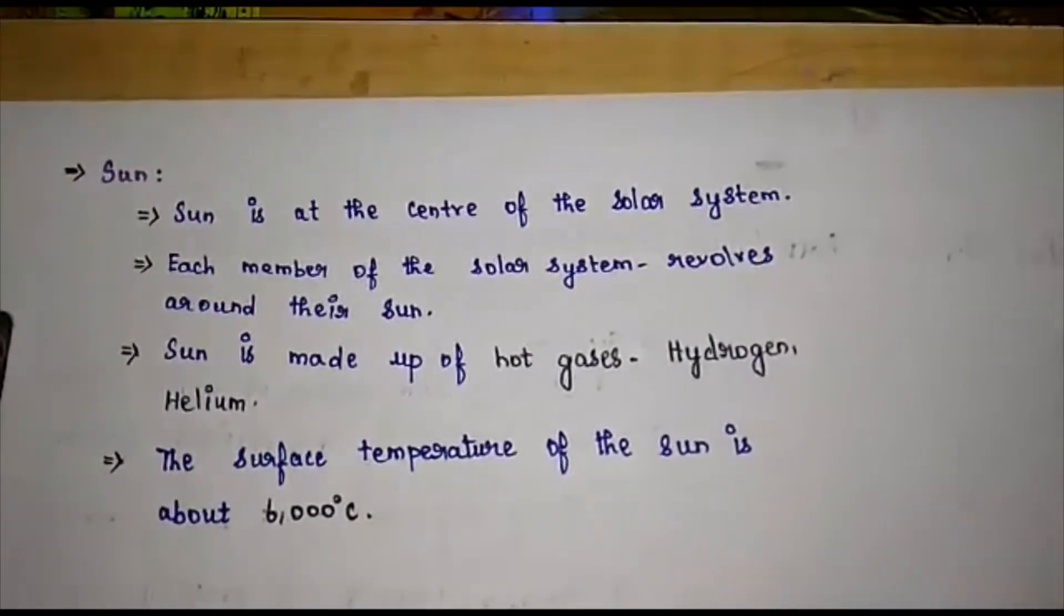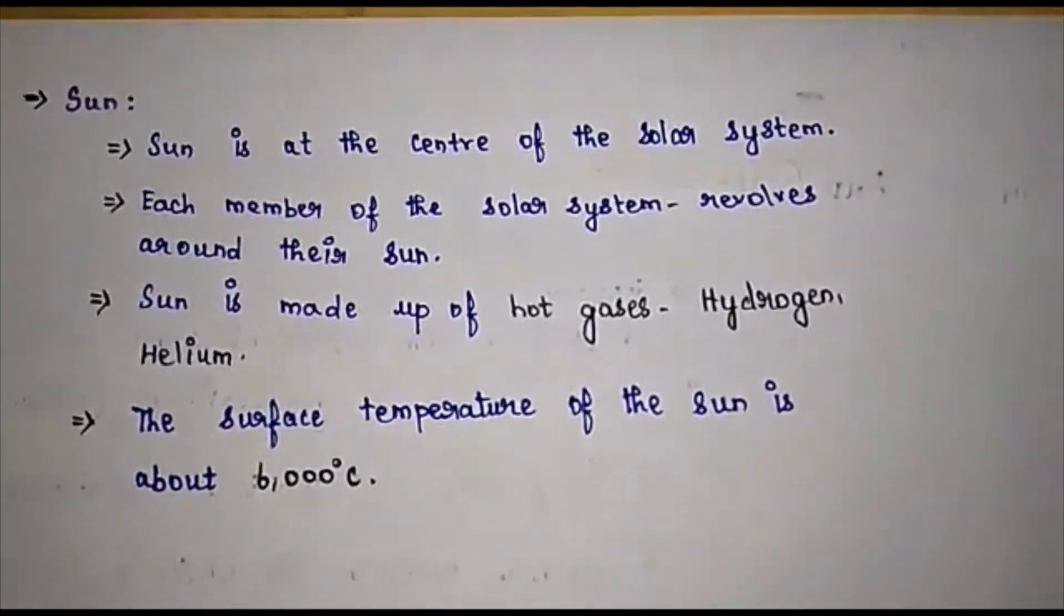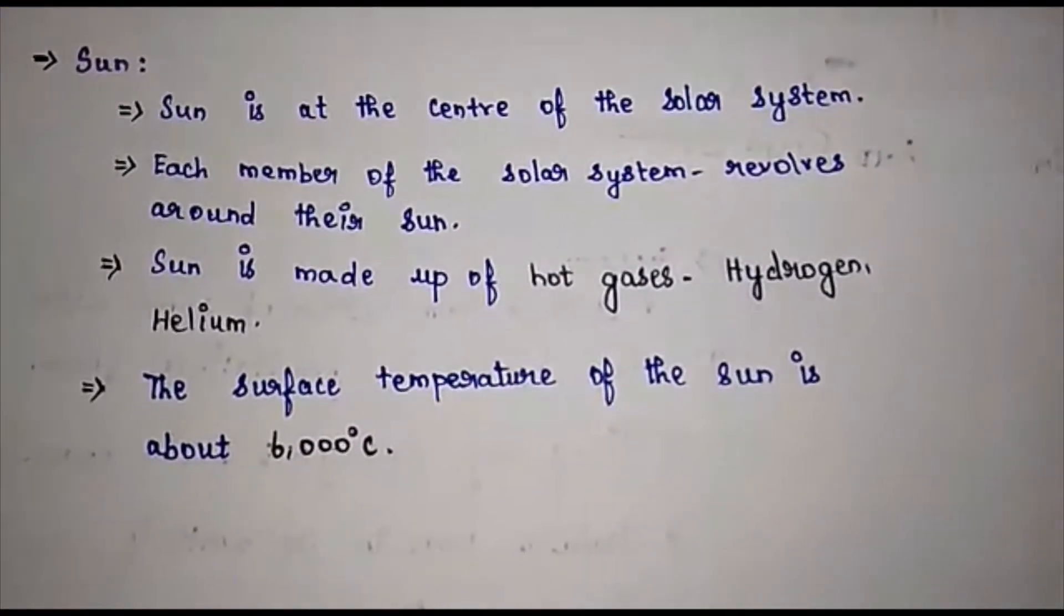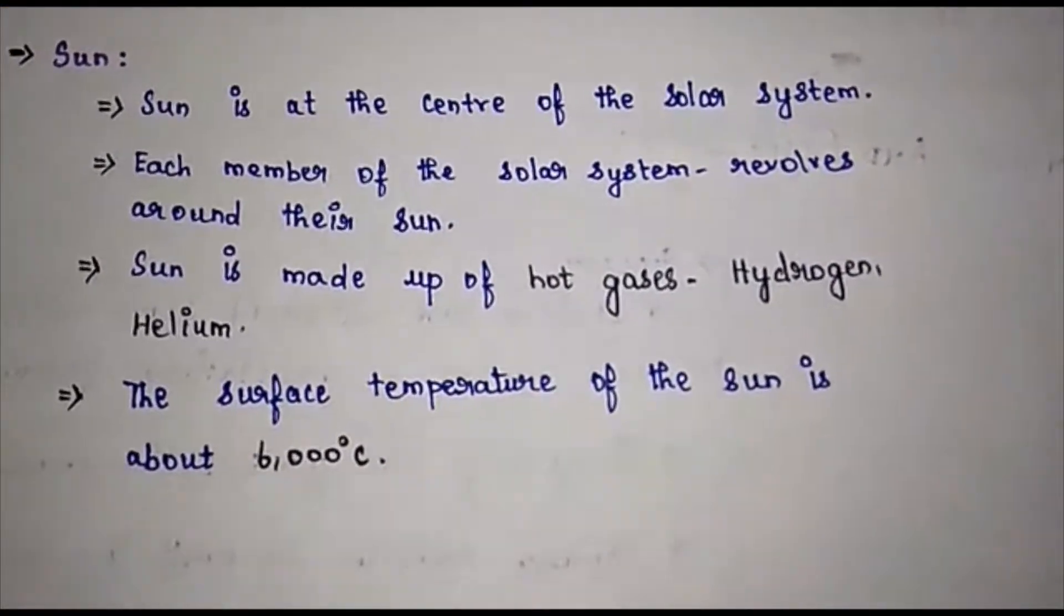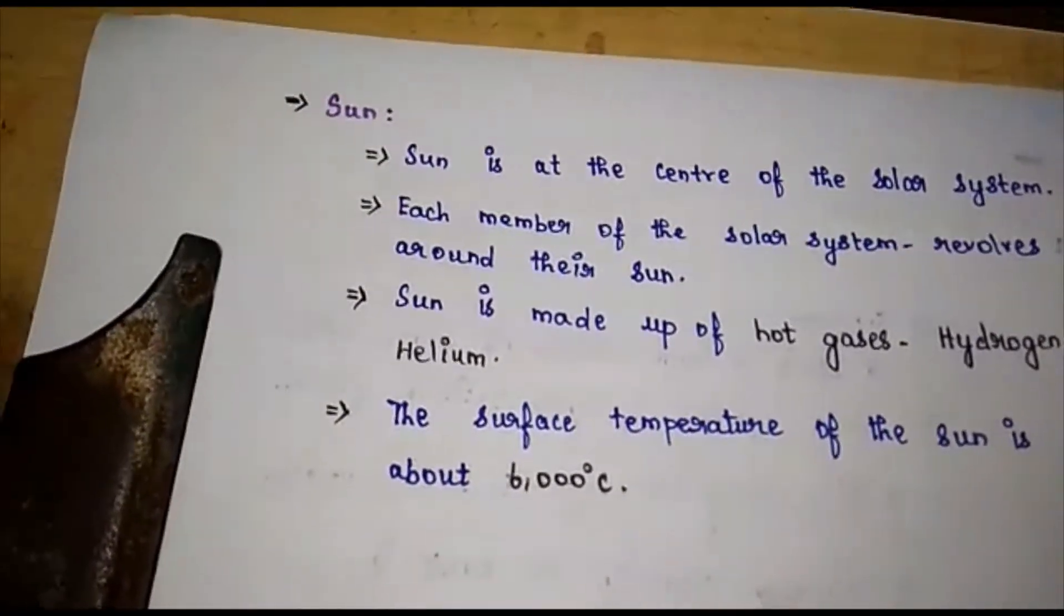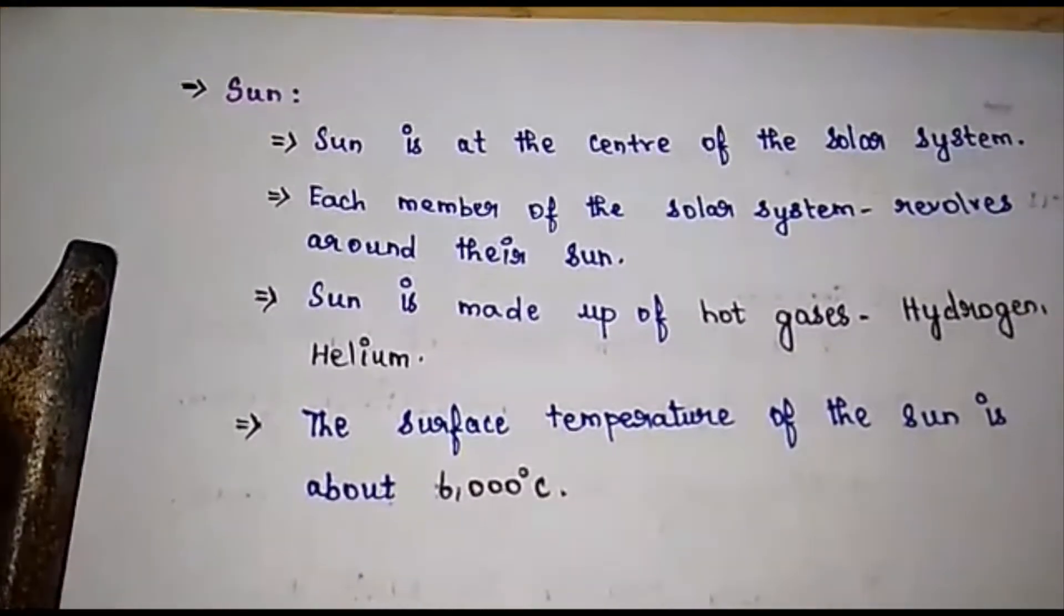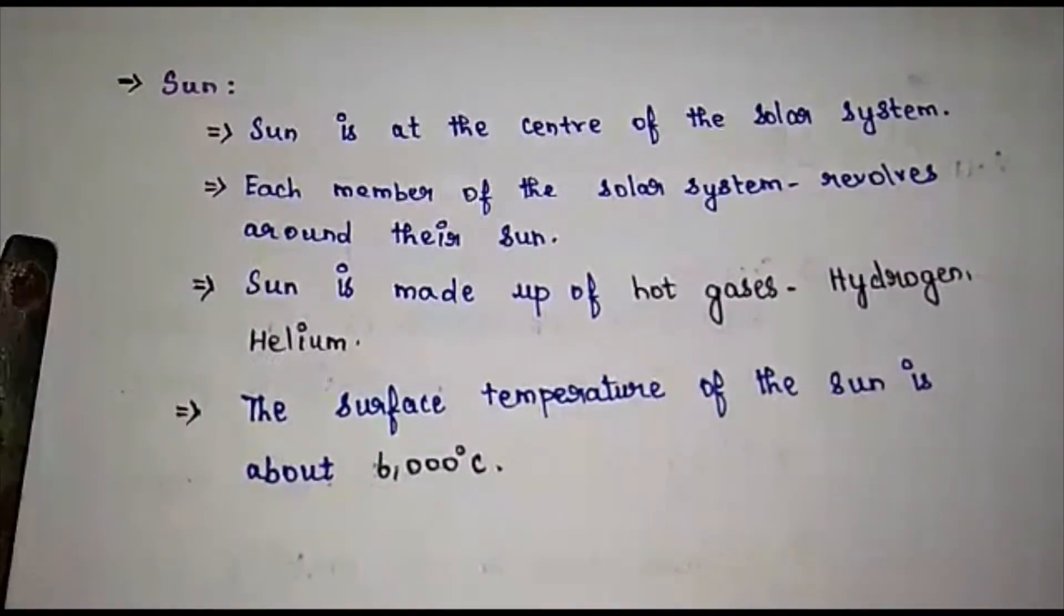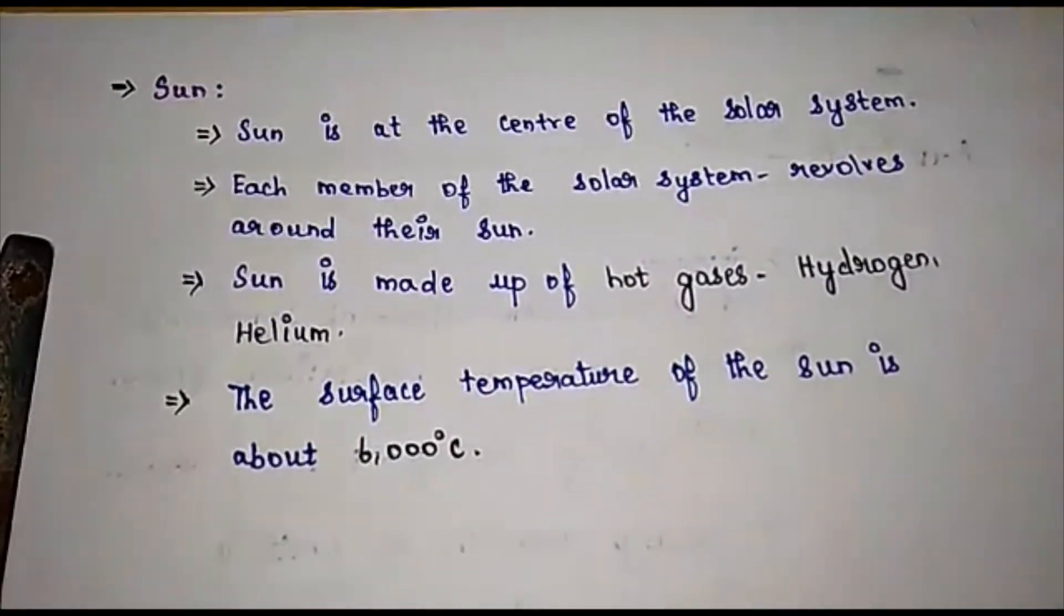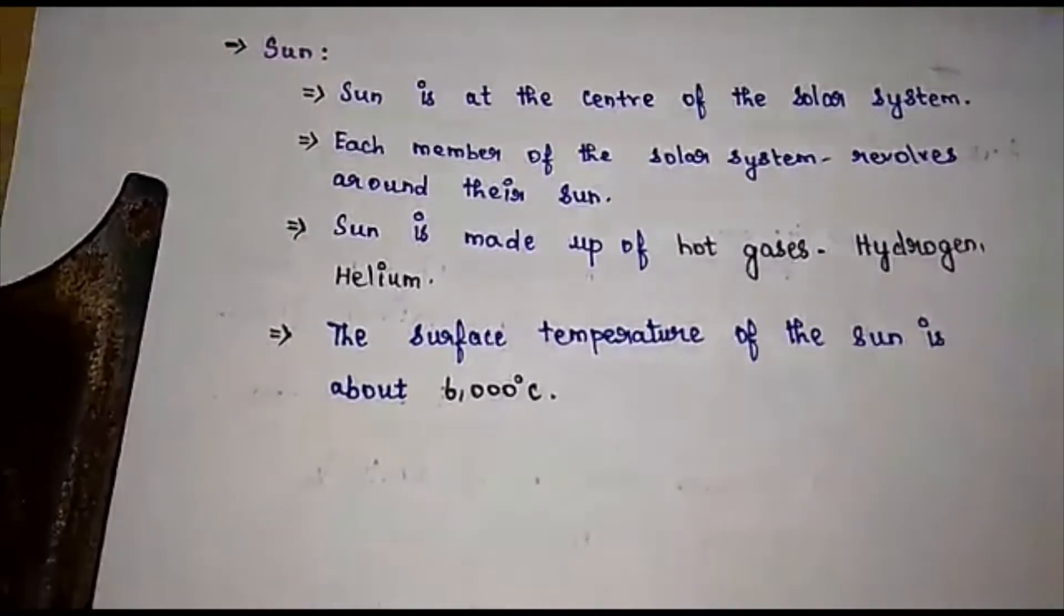In the solar system, first will be the sun. Now we are going to see about the sun. The sun is at the center of the solar system. Each member of the solar system revolves around the sun.